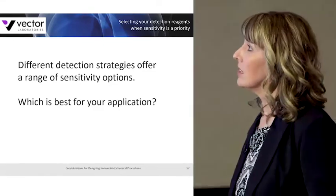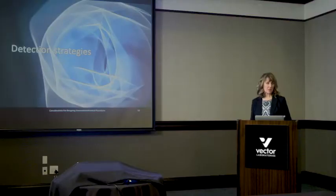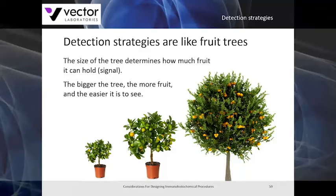Different detection strategies offer a range of sensitivity options, so you'll need to decide what is best for your application. Detection strategies are kind of like fruit trees — the size of the tree determines how much fruit it can hold, and the fruit represents your signal. The bigger the tree, the more fruit it can hold, and the easier it is to visualize underneath your microscope.